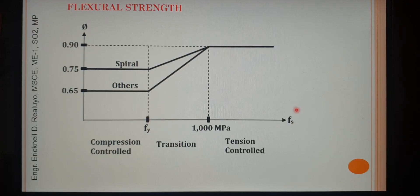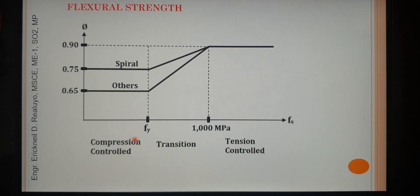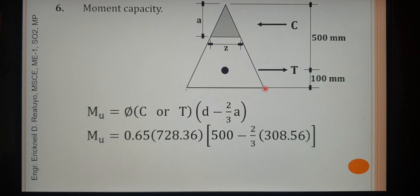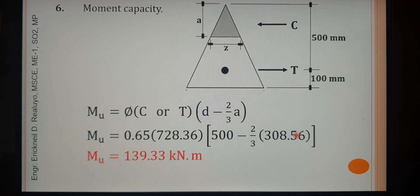For the reduction factor: since FS is below FY, the beam is in the compression-controlled region of the interaction diagram, so the reduction factor φ is 0.65. Using the C value, D, A, and φ = 0.65, the final reduced moment capacity is 139.33 kN·m.